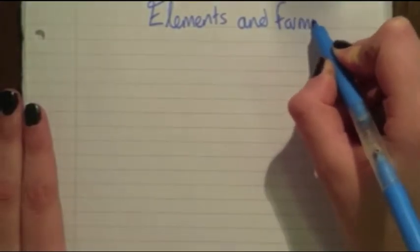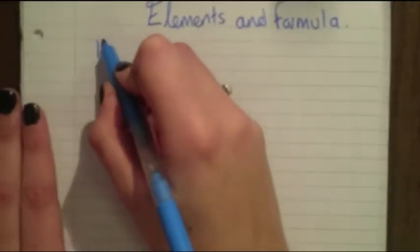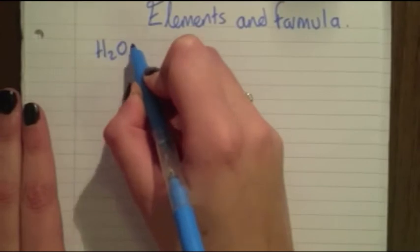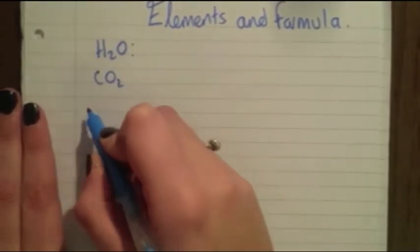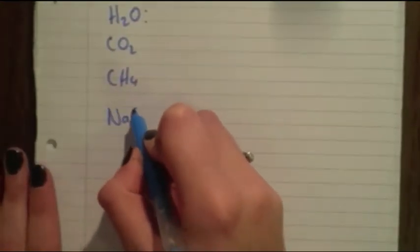Firstly we'll be looking at compounds and what elements are in the compounds. We'll be looking at some pretty well-known compounds: water, also known as H2O; carbon dioxide, also known as CO2; then CH4; sodium chloride, NaCl; sulfuric acid; and sodium carbonate.